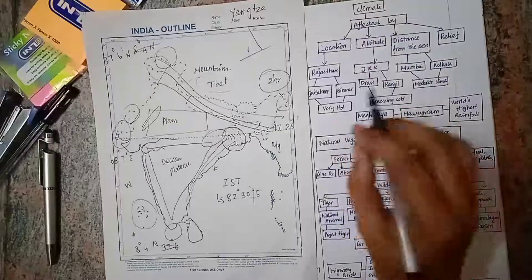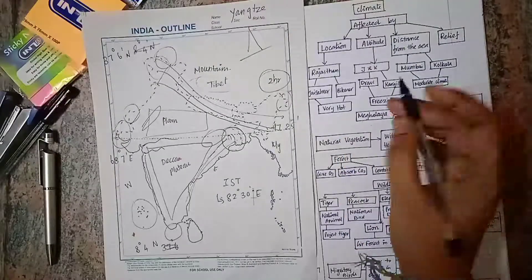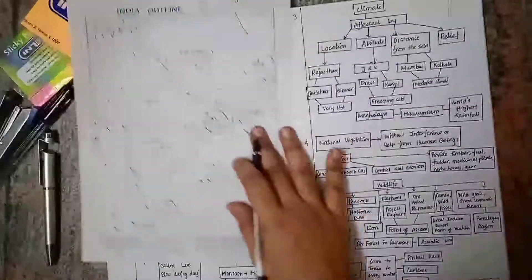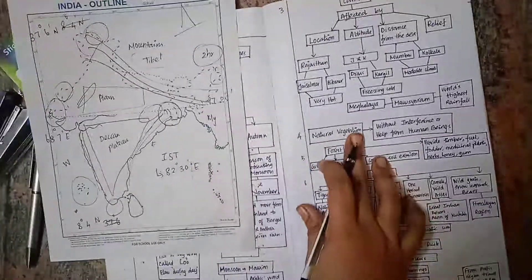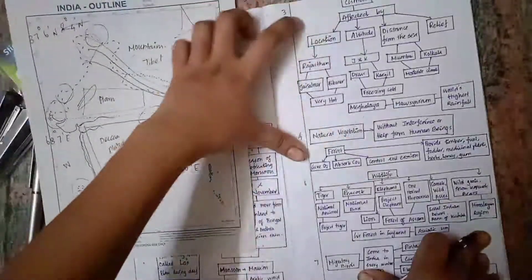In Meghalaya, a place called Mawsynram has the world's highest rainfall region. Mawsynram is the region which has the highest amount of rainfall in the world based on natural interference. These are the things which affect the climate.